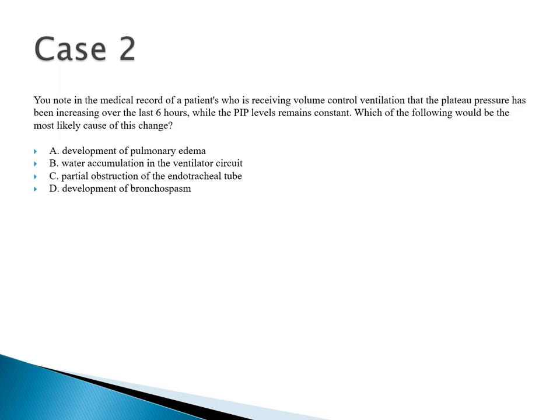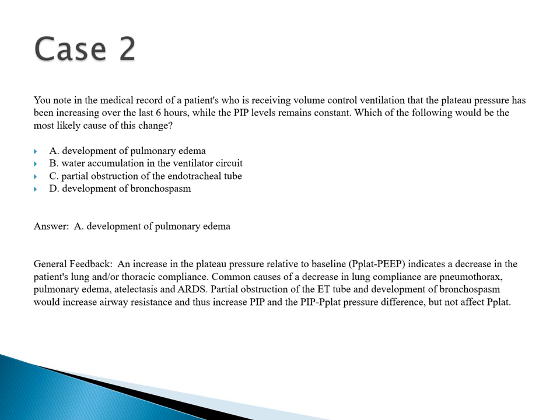Case 2: A patient receiving volume control ventilation has had plateau pressure increase over the last six hours, while peak inspiratory pressure (PIP) levels remain constant. What is the most likely cause? Choices: pulmonary edema, water accumulation in tubing, partial ETT obstruction, or bronchospasm. Partial ETT obstruction and bronchospasm would affect peak airway pressure, not plateau. Water accumulation affects waveform appearance. The answer is pulmonary edema — it affects compliance and therefore plateau pressure without necessarily affecting the resistance-dependent peak pressure.